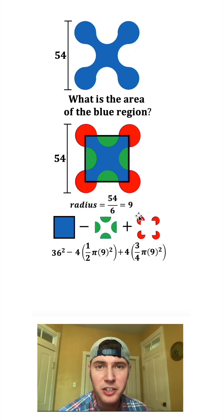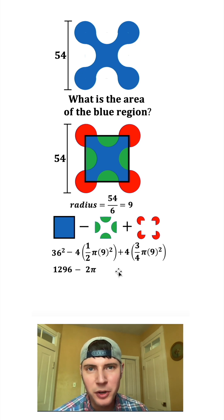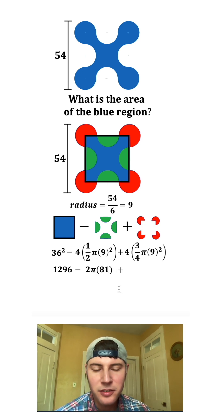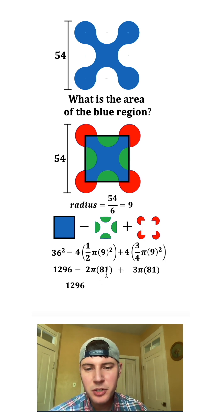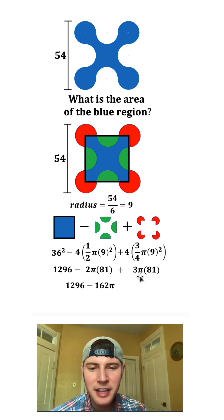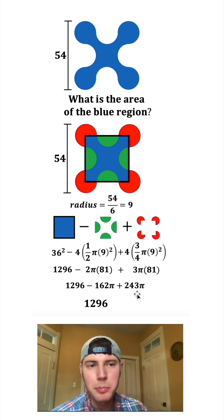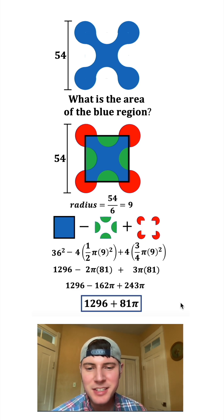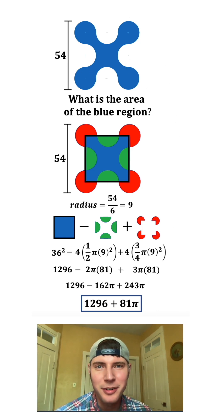Plugging in r = 9: 36 squared is 1296. We subtract 4 times one-half, which is 2, times pi times 81 (since 9 squared is 81), and add 4 times three-fourths, which is 3, times pi times 81. That gives us 1296 minus 162 pi plus 243 pi. Combining the pi terms: negative 162 pi plus 243 pi gives us positive 81 pi. So the final answer is 1296 plus 81 pi — that's the area of the blue figure!